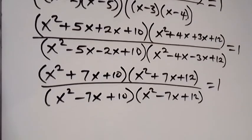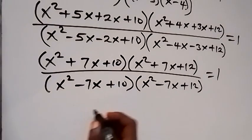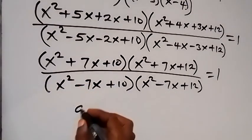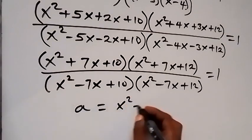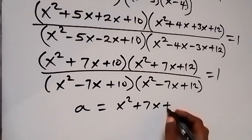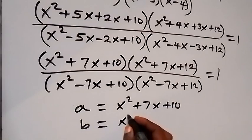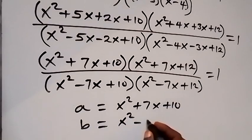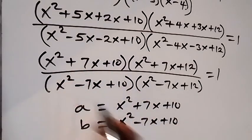Now we use a substitution. Let a = x² + 7x + 10, and b = x² − 7x + 10.